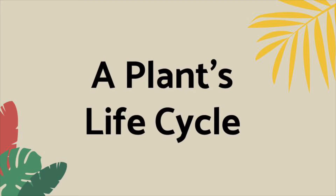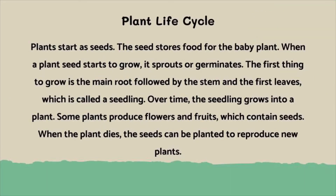Now we're going to look into a plant's life cycle. Plants start as seeds. The seed stores food for the baby plant. When a plant seed starts to grow, it sprouts or germinates. The first thing to grow is the main root, followed by the stem and the first leaves, which is called a seedling. Over time, the seedling grows into a plant. Some plants produce flowers and fruits, which contain seeds. When the plant dies, the seeds can be planted to reproduce new plants.